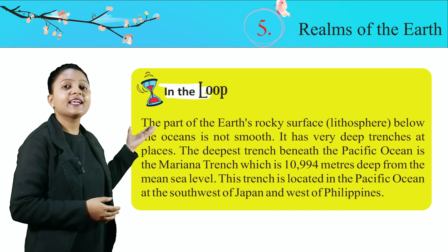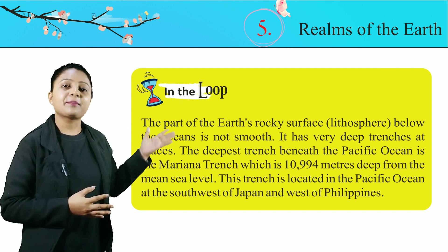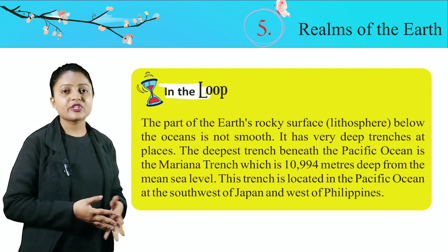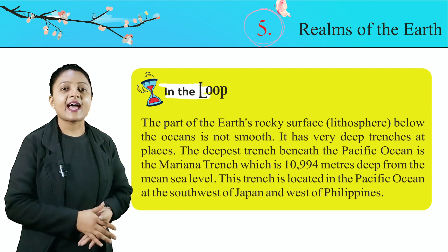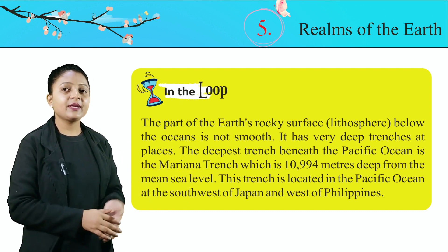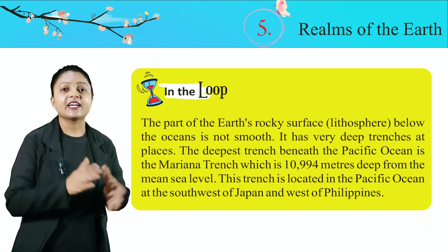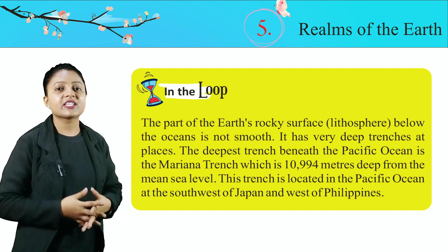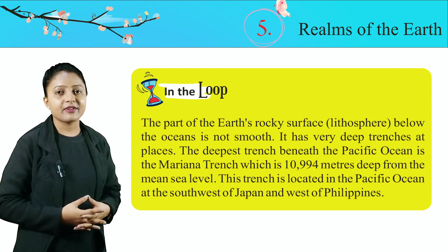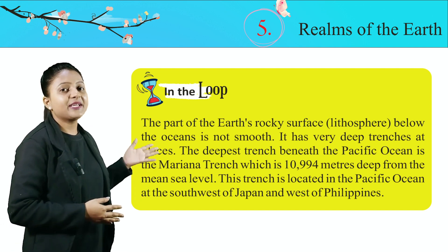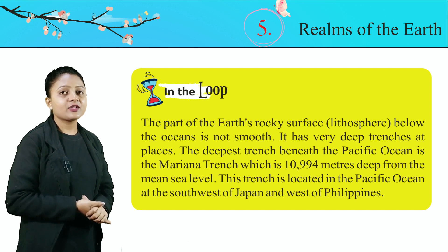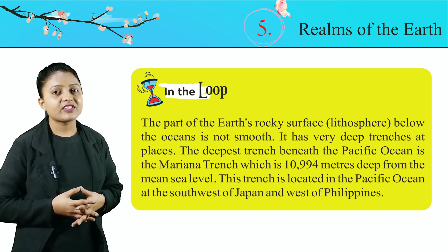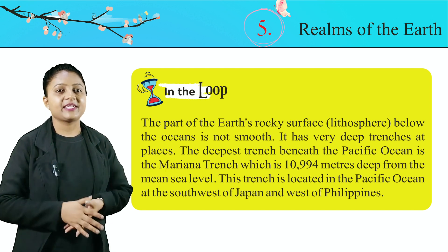Fact file: The part of the Earth's rocky surface — the lithosphere — below the ocean is not smooth. It has very deep trenches at places. The deepest trench beneath the Pacific Ocean is the Mariana Trench, which is 10,994 meters deep from the mean sea level. This trench is located in the Pacific Ocean at the southwest of Japan and west of the Philippines.